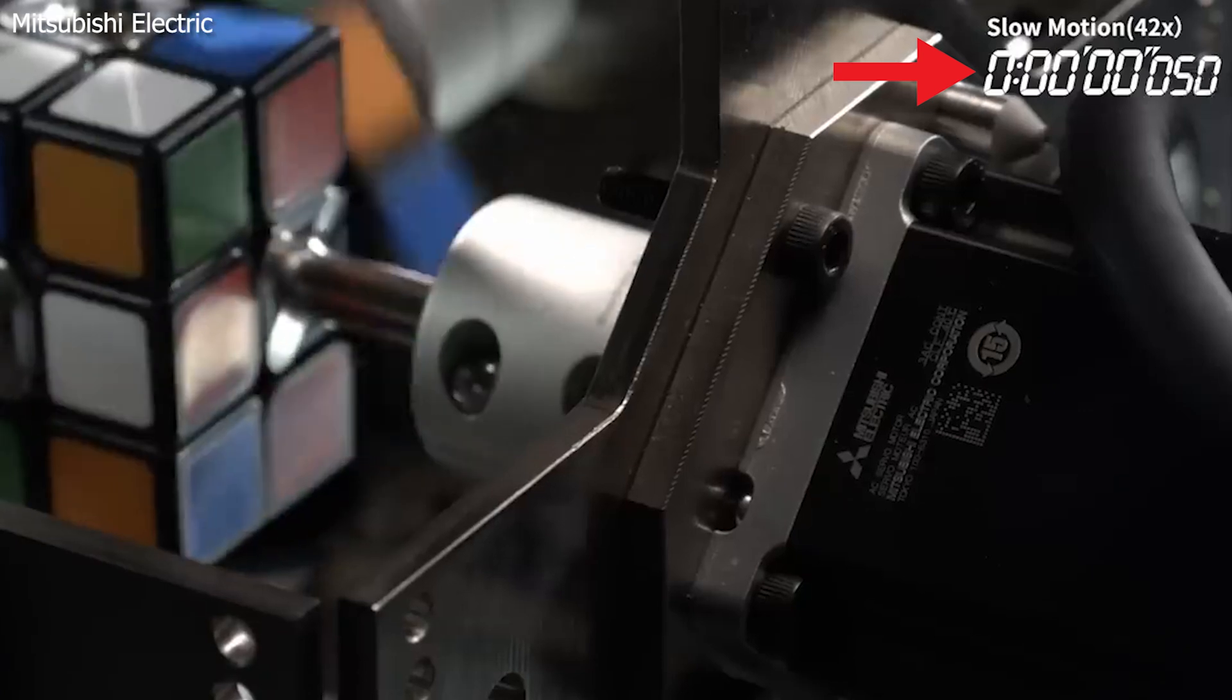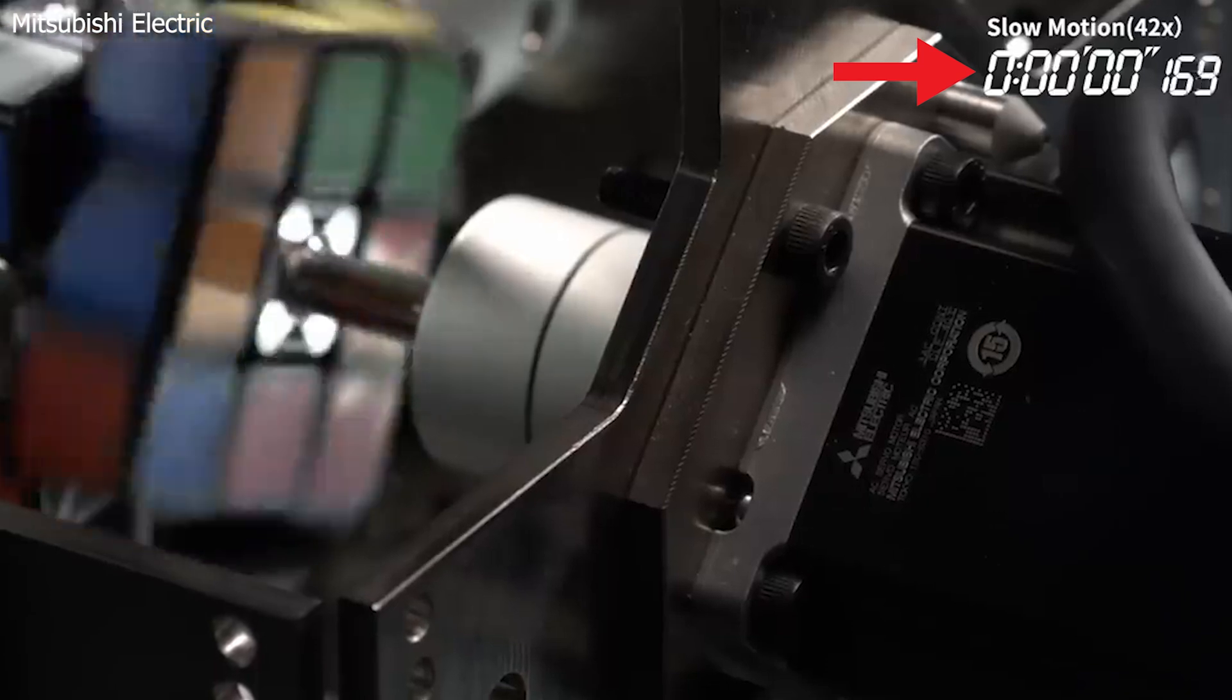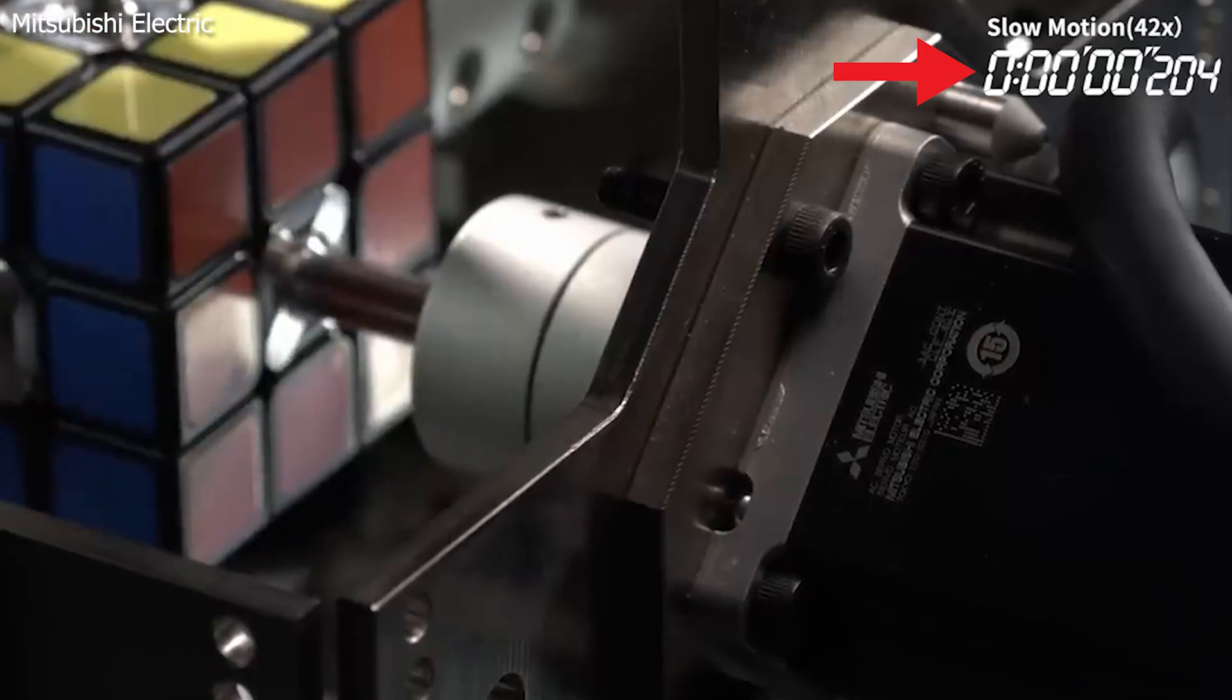Thanks to Mitsubishi's electric cutting-edge servo motors and a genius AI algorithm, this bot can whip a 90 degree rotation in less than a second. Now that is what I call fast.